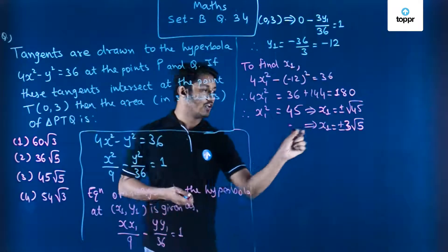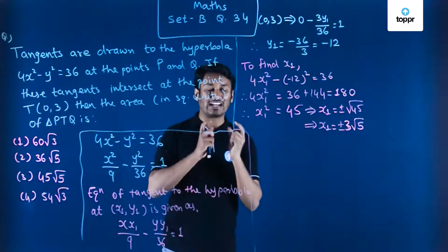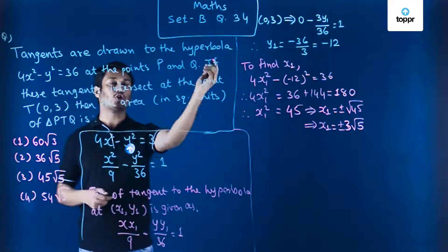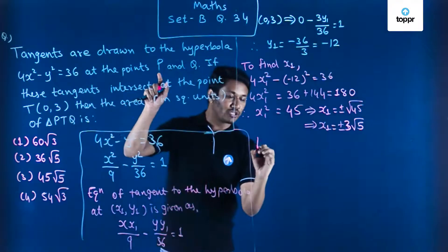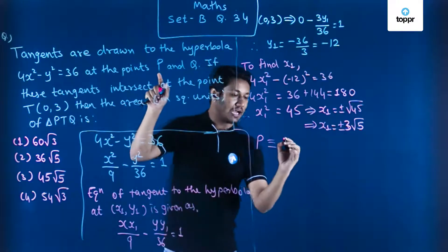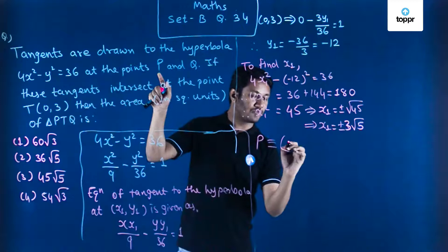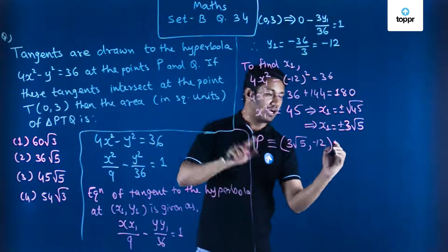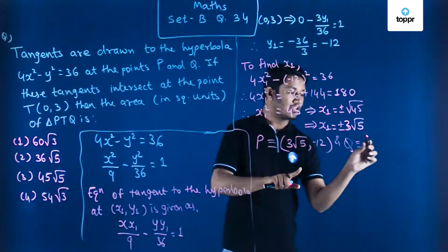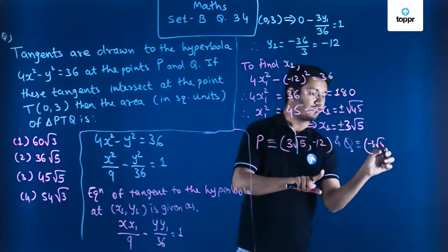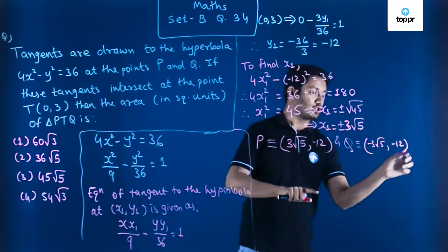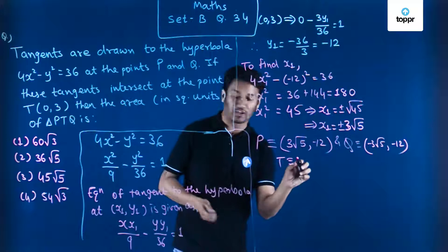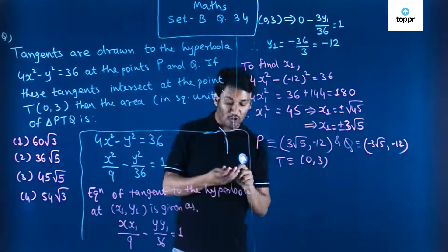We have two values of x₁, meaning there are two points — which matches the question stating tangents are drawn at points P and Q. So point P has coordinates (3√5, -12) and point Q has coordinates (-3√5, -12). The coordinates of T are already given as (0, 3), so now we can find the area of the triangle.